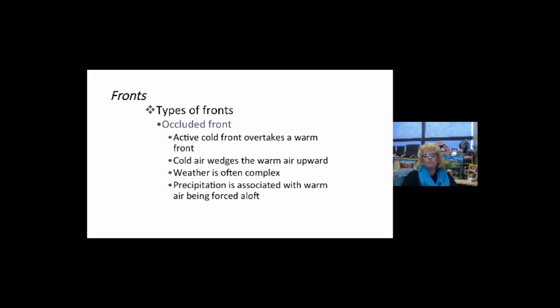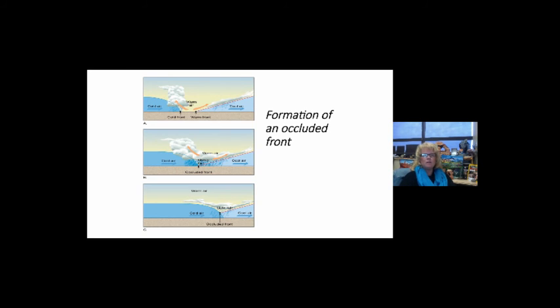An occluded front is where an active cold front overtakes a warm front, and the cold air wedges up against the warm air. This is where you get really crazy weather, even more so than with a stationary front. Precipitation associated with warm air gets forced to loft, so you can cool that air mass that's typically pretty moist and end up with interesting weather. The cold front comes in from one side, the warm from another. The cold pushes into the warm. That makes sudden cooling of that warm, moist air, it hits dew point, and you'll produce pretty heavy thunderstorms and clouds that produce quite a bit of rain.